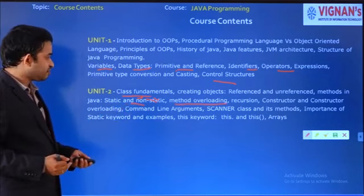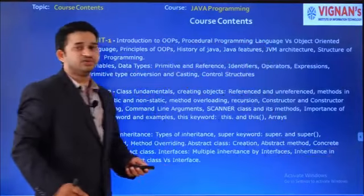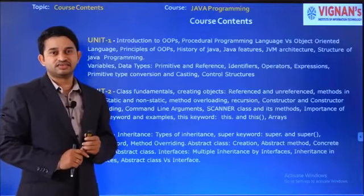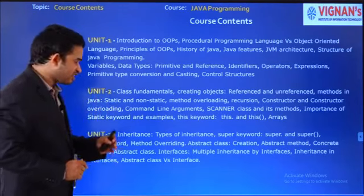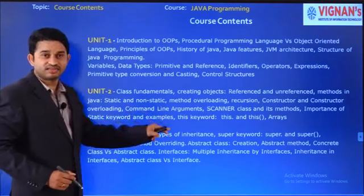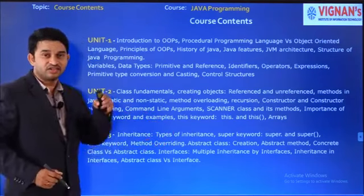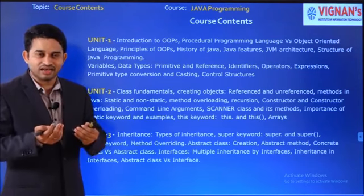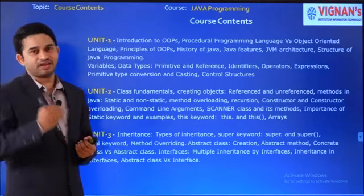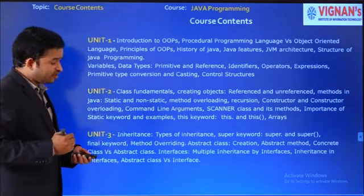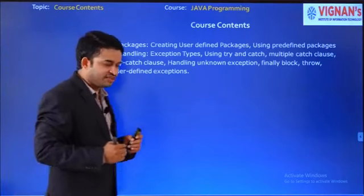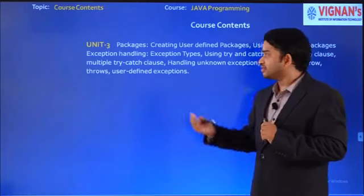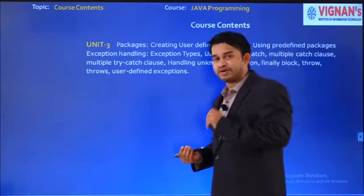In unit three, I will cover the basic pillars of object-oriented programming: abstraction, encapsulation, inheritance, and polymorphism. Inheritance is very important because it provides reusability of code — it reduces the number of lines of code and the time to develop applications. I will also explain packages in unit three. In C we used header files; here in Java, we import packages — a rich set of packages that are very important while developing any applications.